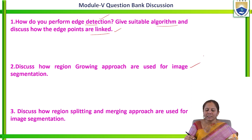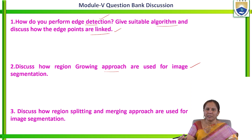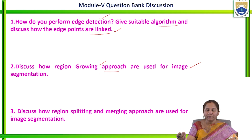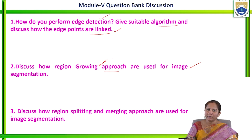The next question is: discuss how the region growing approach is used for image segmentation. Under image segmentation, different techniques can be applied — thresholding, edge-based detection, and region-based segmentation. In region-based segmentation, the two techniques are region growing and region splitting and merging. We have to explain the region growing algorithm, consider an example, and show how the region will grow. This concept is clearly explained in previous sessions — you can refer to the playlist.